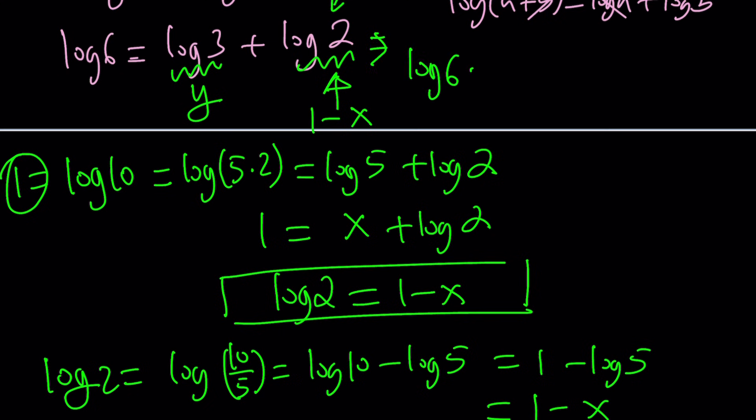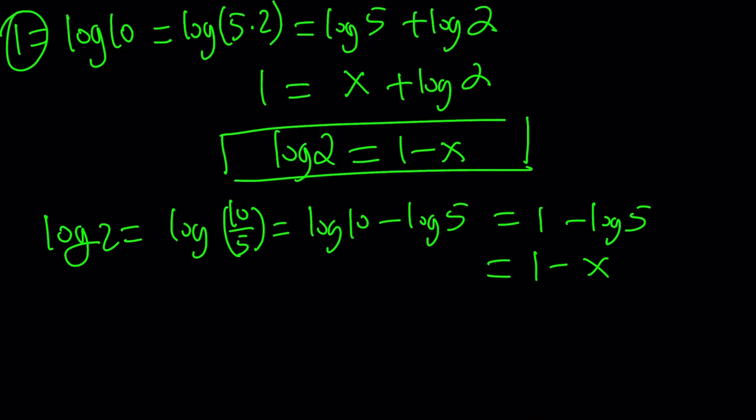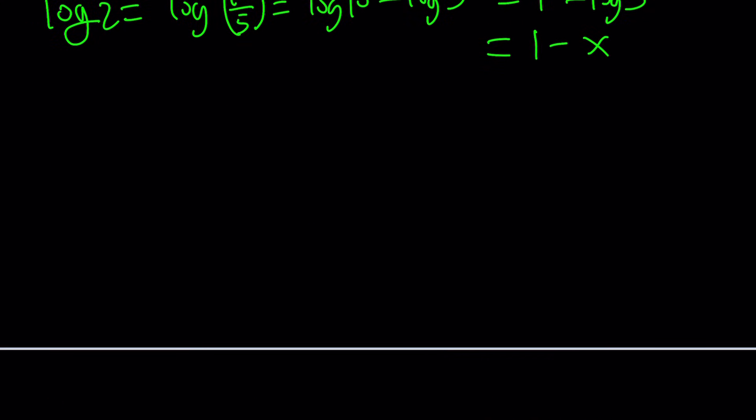Once you plug it in, you're going to get the following. Log six is going to be y plus one minus x. Of course, there's a lot of different ways to write it using commutative property. You can also write this as y minus x plus one, negative x plus y plus one, so on and so forth. But I think this will suffice. That's pretty much the first method. I hope you liked it. Let me know, but we're not done yet.